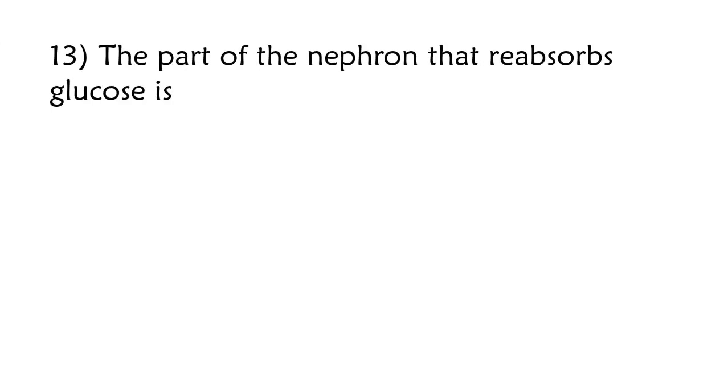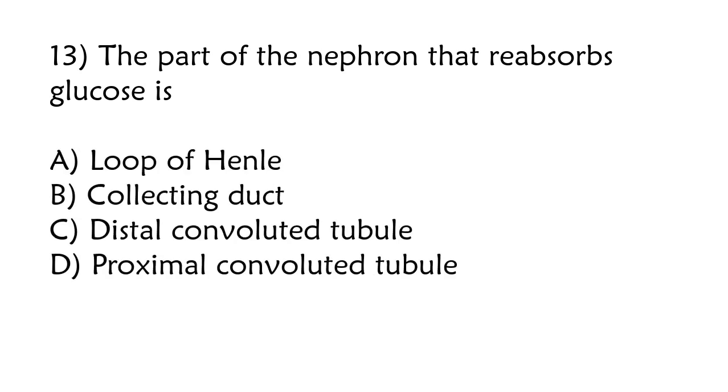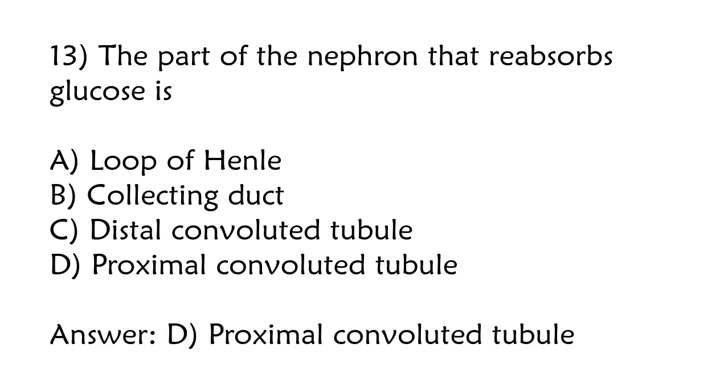The part of the nephron that reabsorbs glucose is loop of Henle, collecting duct, distal convoluted tubule, proximal convoluted tubule. The correct answer is option D, proximal convoluted tubule.